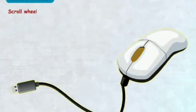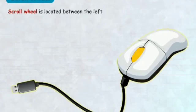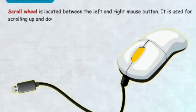Scroll wheel is located between the left and the right mouse button. It is used for scrolling up and down on the monitor.